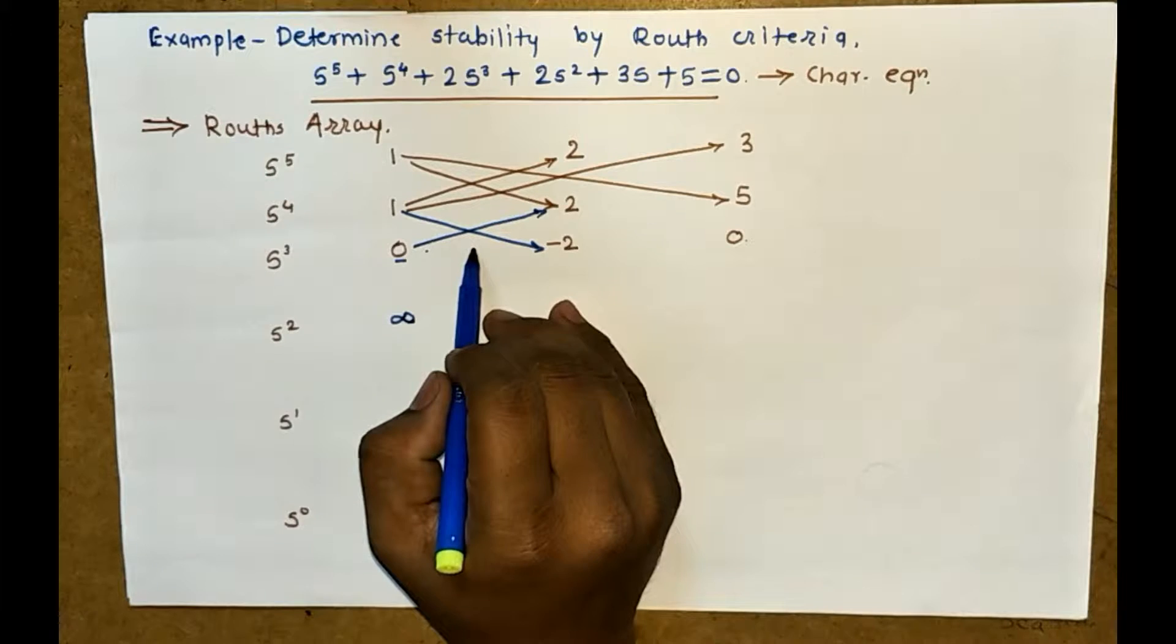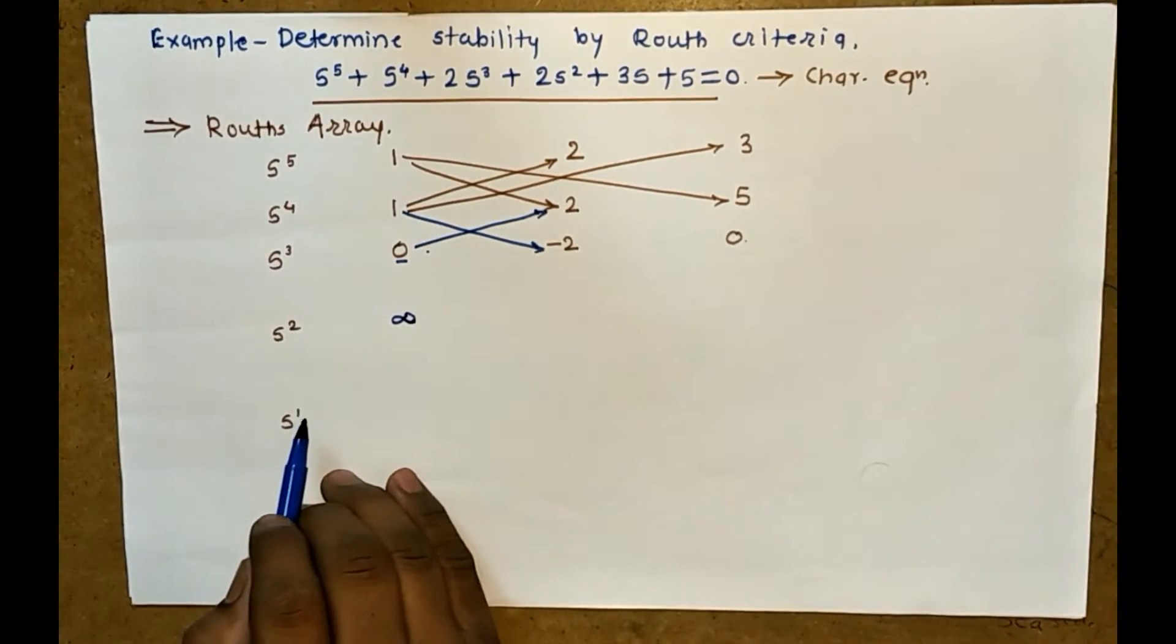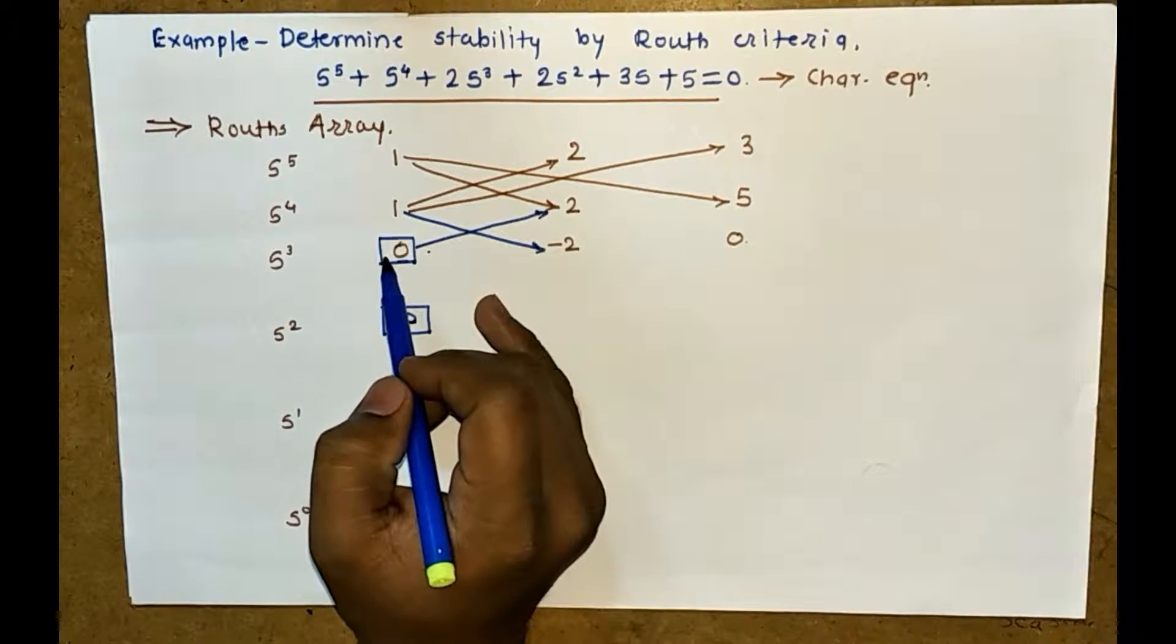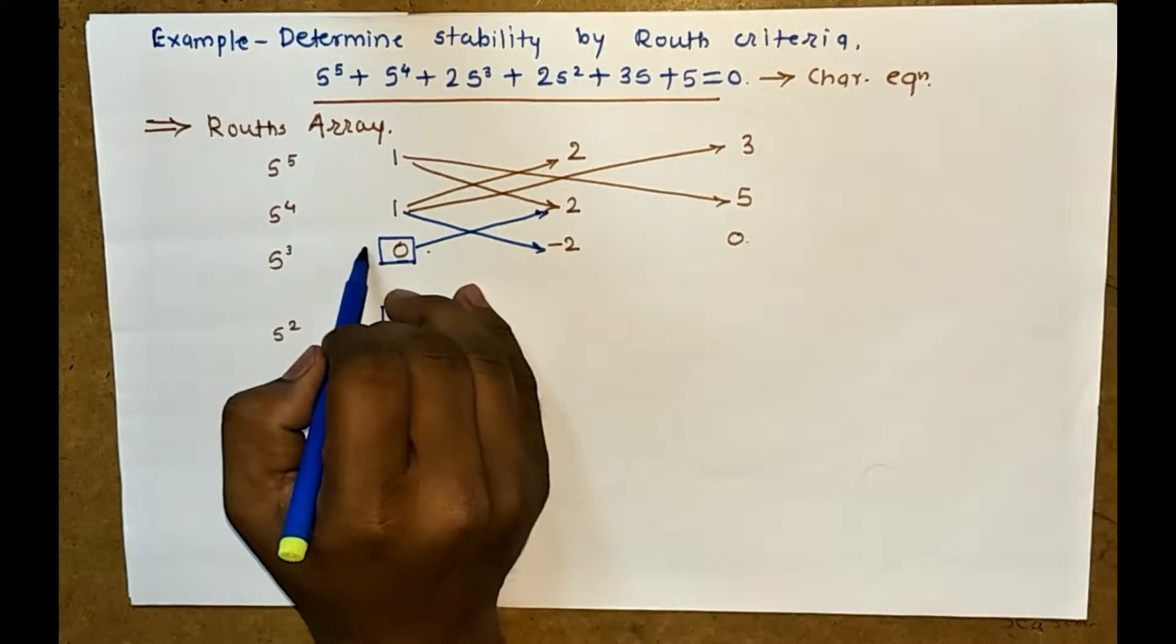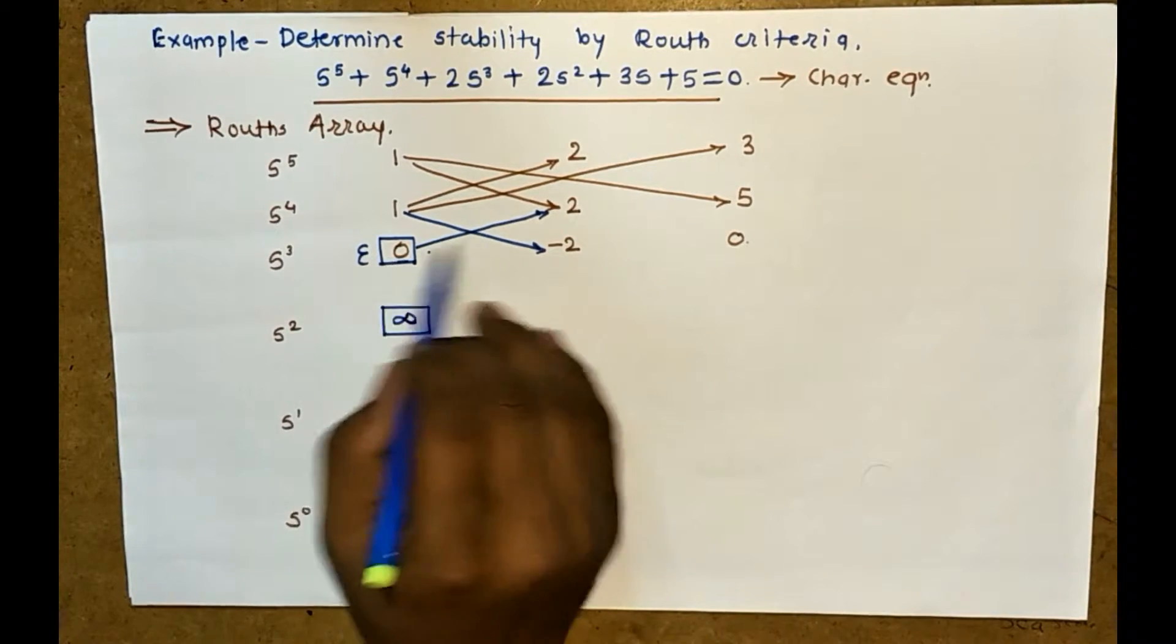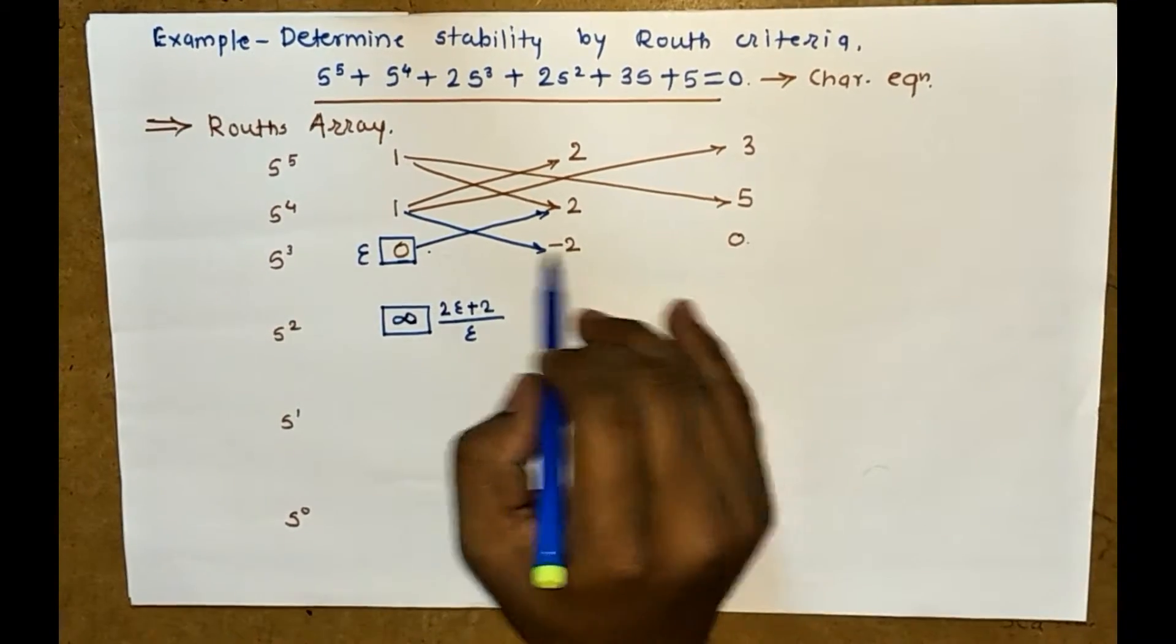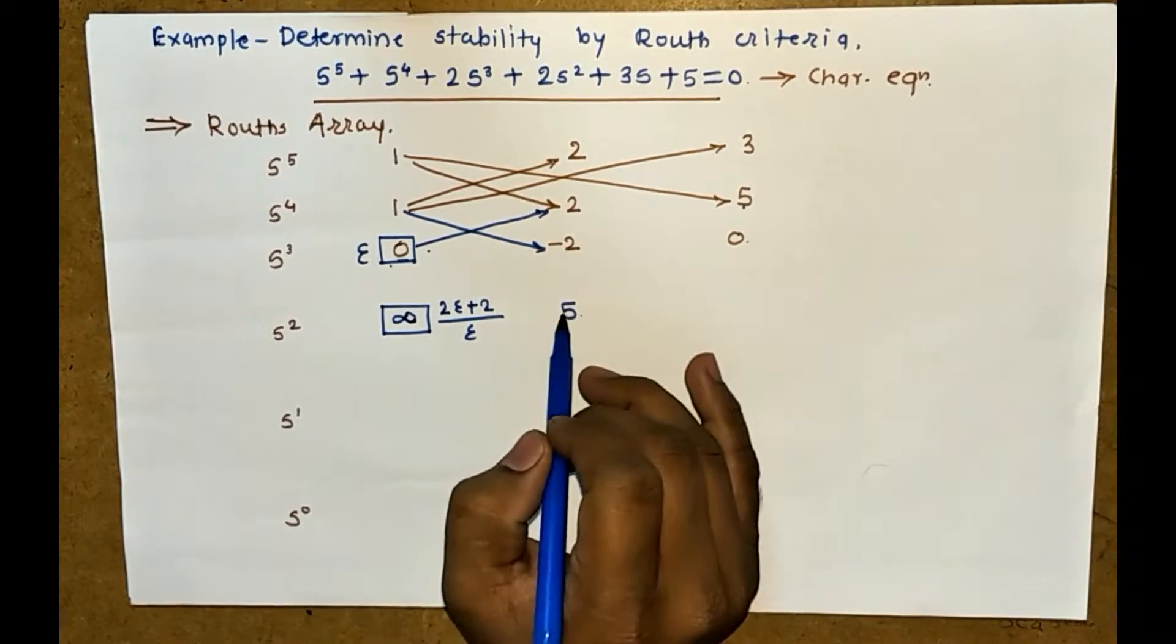So here we get infinity, so we need to find out what is the sign, positive or negative. We are replacing this 0, because of that we get the infinity, by some constant epsilon. The value of epsilon is very very small. If we solve this we get 2 epsilon plus 2 divided by epsilon, and 5 epsilon minus 0 divided by epsilon is 5.